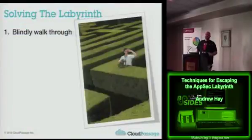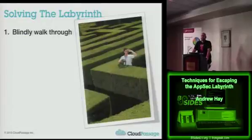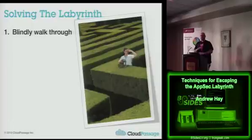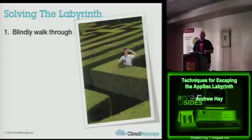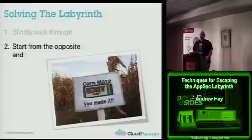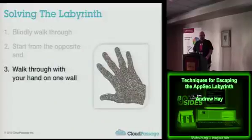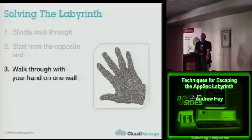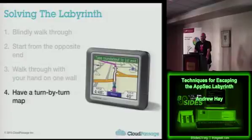There are a number of ways to solve a labyrinth, and there's actually a whole bunch of game theory around how to quickly solve labyrinths and mazes. You can blindly walk through the maze, which is really what security people are forced to do now. You could start from the opposite end, but it's still probably going to take the same time. There is a known way of walking with one hand on the wall — eventually you'll get out, but it's going to take a very long time. And then there's having a turn-by-turn map, which is definitely the quickest way.